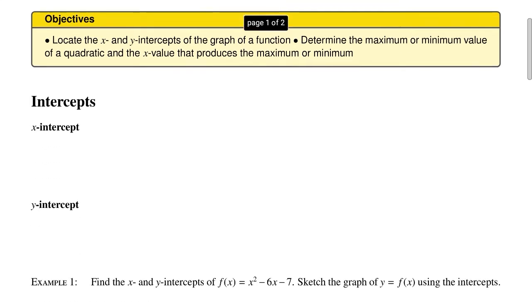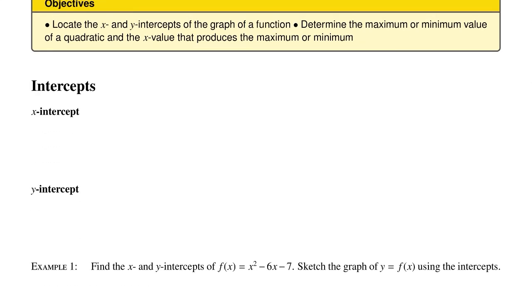So let's start with the intercepts. There are two intercepts here, the x-intercept and the y-intercept. And these correspond to the points on the graph where the graph of a function intersects the axes.